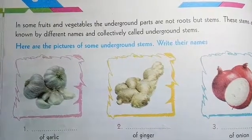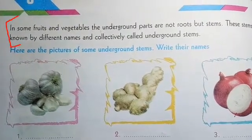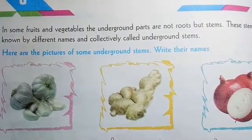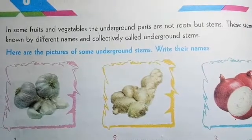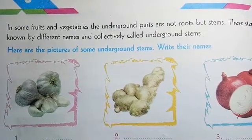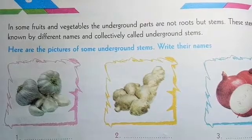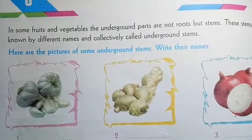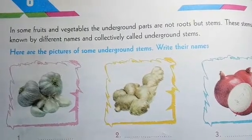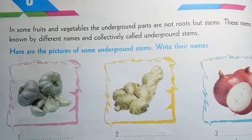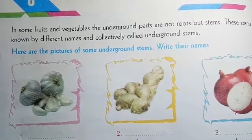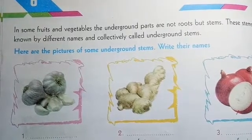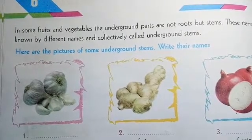Please read these lines. In some fruits and vegetables, the underground parts are not roots, but stems. Kuch sabziyon mein unka zameen ke andar ka jo bhaag hota hai — underground part — woh jad nahi hota. Aam taur pe plants mein kya hota hai: zameen ke niche root hota hai aur upar stem, tana. Lekin kuch ke andar ye underground jad nahi hota, root nahi hota, but stem hota hai.